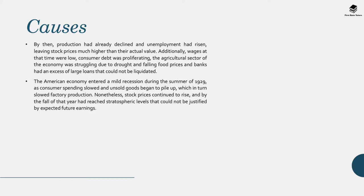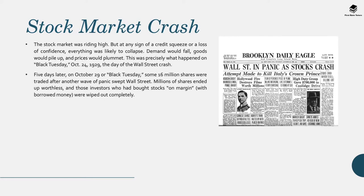Additionally, wages at that time were low, consumer debt was proliferating, the agricultural sector was struggling due to drought and falling food prices, and banks had an excess of large loans that couldn't be liquidated. The American economy entered a mild recession during 1929 as consumer spending slowed and unsold goods began to pile up, which in turn slowed factory production. Nonetheless, stock prices continued to rise and by the fall of that year had reached stratospheric levels that couldn't be justified by expected future earnings, leading to the stock market crash.